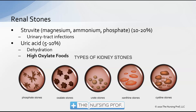The third type, which is relatively rare at 5 to 10 percent, is the result of uric acid. This is usually caused by dehydration and could also be the result of eating high oxalate foods. As you can see at the bottom of the screen, we have some different types of stones pictured there. Obviously these are magnified and you're not going to know exactly what kind it is when the stone passes.